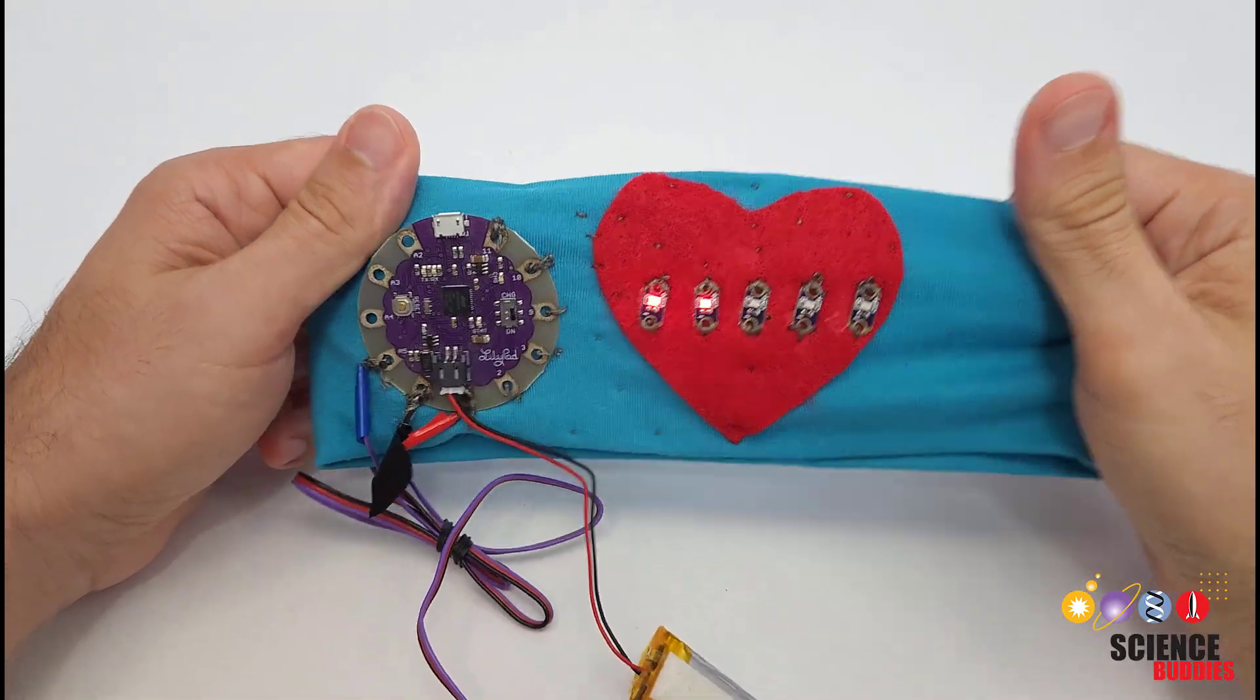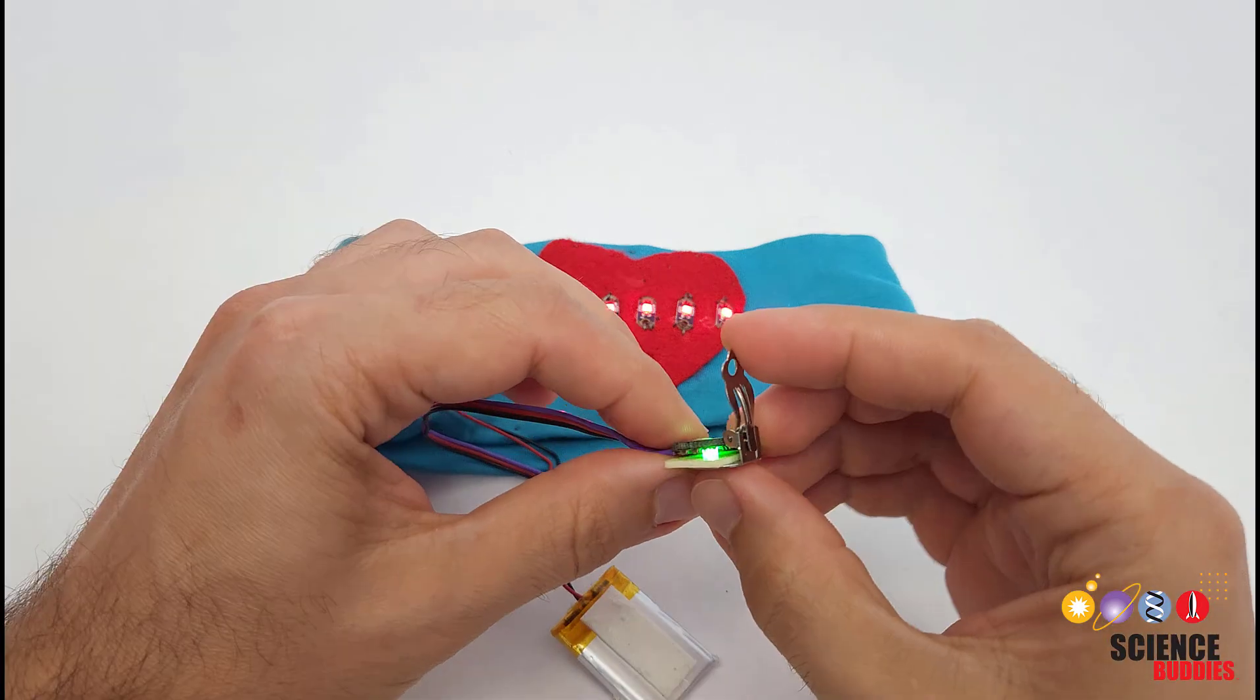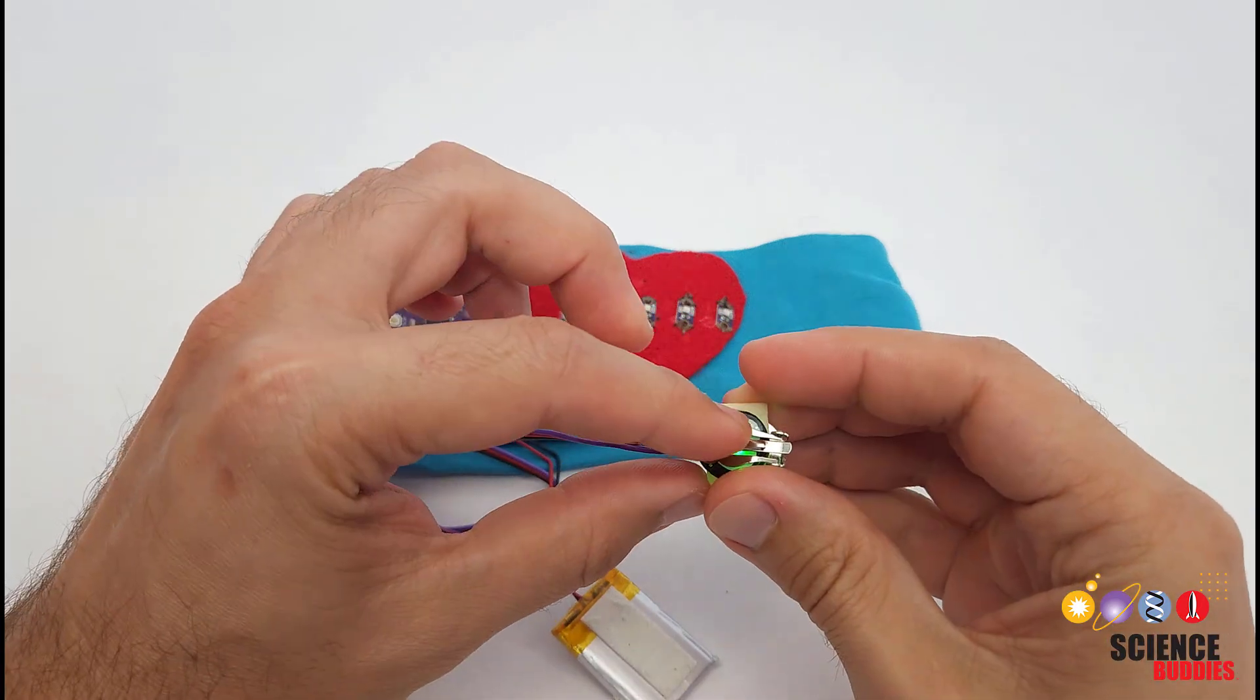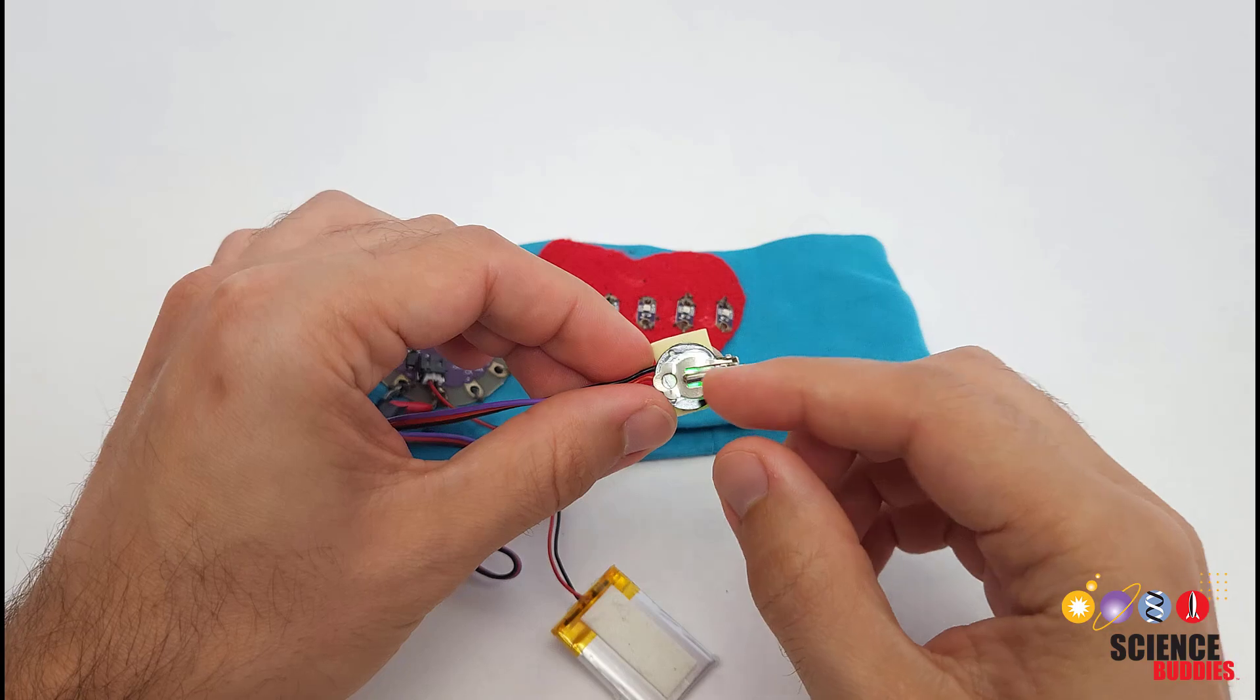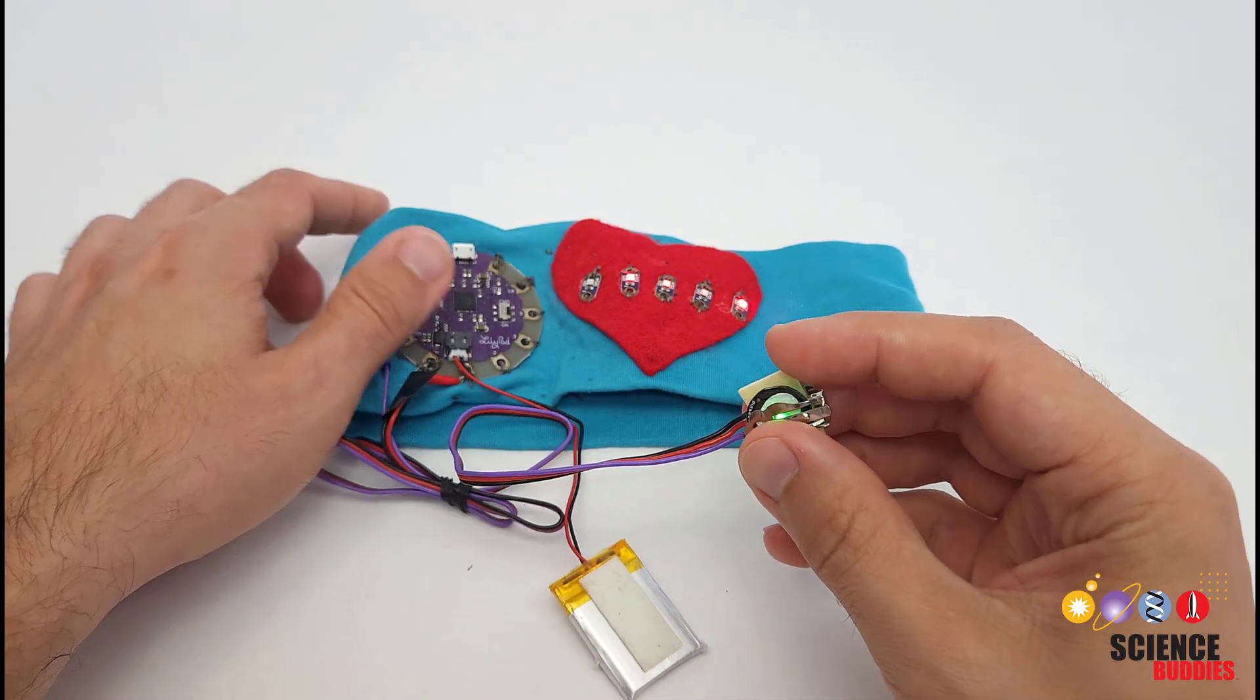I've actually mounted the entire thing on a headband, so you could wear this around your head and use this little metal clip to attach the pulse sensor to your earlobe instead of a fingertip, but you could attach it to your wrist and wear it on your fingertip as well.